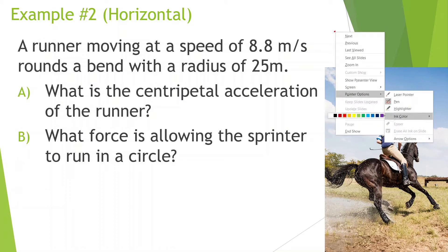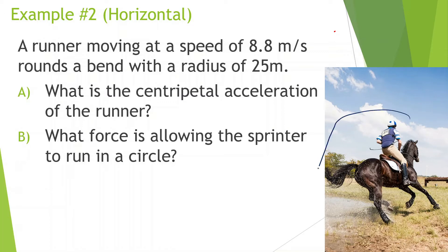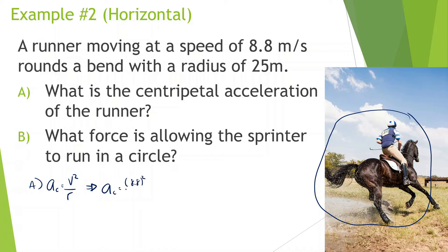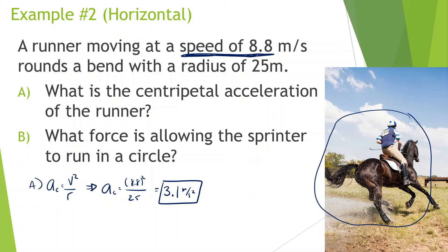This image demonstrates well what happens when you're running in a circle. Centripetal acceleration equals v squared over r. So centripetal acceleration equals 8.8 squared divided by 25, which gives us 3.1 meters per second squared. Even though something may be going at a constant speed of 8.8 meters per second, there can still be an acceleration if it's changing direction — that's why we have centripetal acceleration.